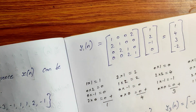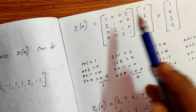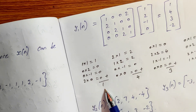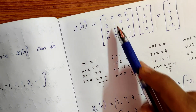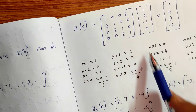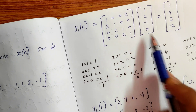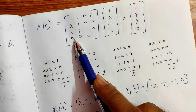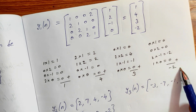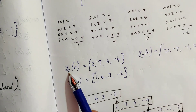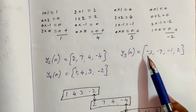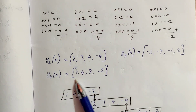Performing matrix multiplication for overlap add: first row — 1×1=1, 0×2=0, 0×(-1)=0, 2×0=0, last add = 1. Next row — 0×1=0, 2×2=4, 1×(-1)=-1, 0×0=0, last add = 3. Next — 0×1=0, 0×2=0, 2×(-1)=-2, 1×0=0, last add = -2. y1[n] = {1, 2, 0, -2}. y2[n] = {2, 7, 4, -4}. y3[n] = {-3, -7, -1, 2}. y4[n] = {1, 4, 3, -2}.